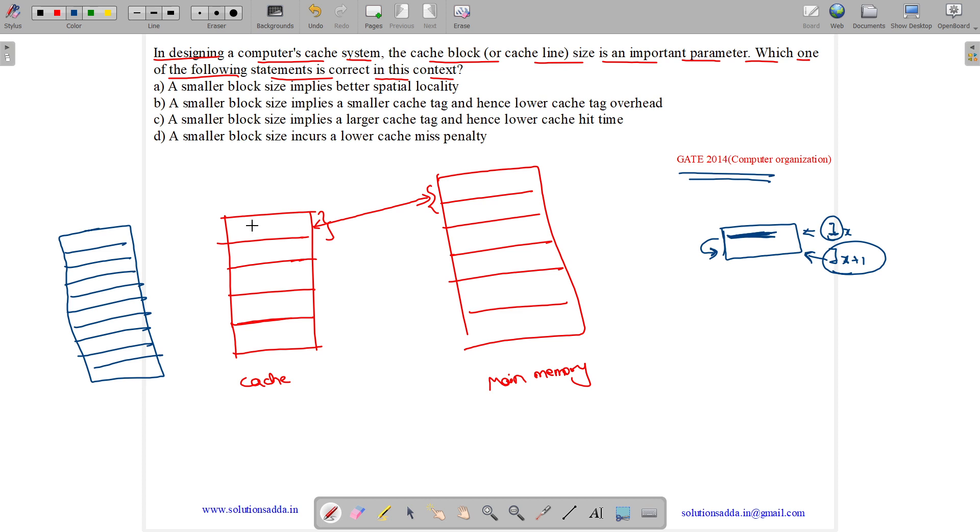Now let's suppose we were accessing this block initially and now we are accessing this block. But this new block size is smaller. Thus there is high possibility that the new data that will be accessed will be out of this block's scope. So it will not improve spatial locality, it will basically reduce the spatial locality.